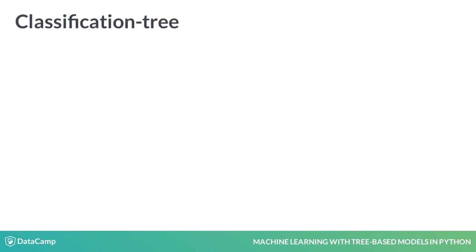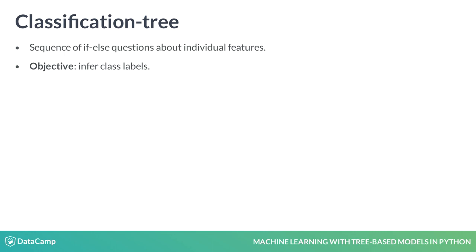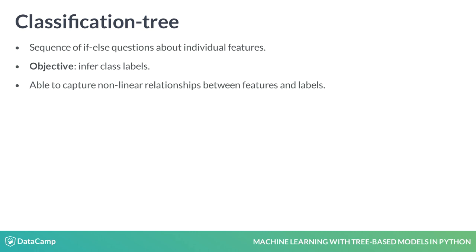Given a labeled dataset, a classification tree learns a sequence of if-else questions about individual features in order to infer the labels. In contrast to linear models, trees are able to capture nonlinear relationships between features and labels. In addition, trees don't require the features to be on the same scale through standardization, for example.